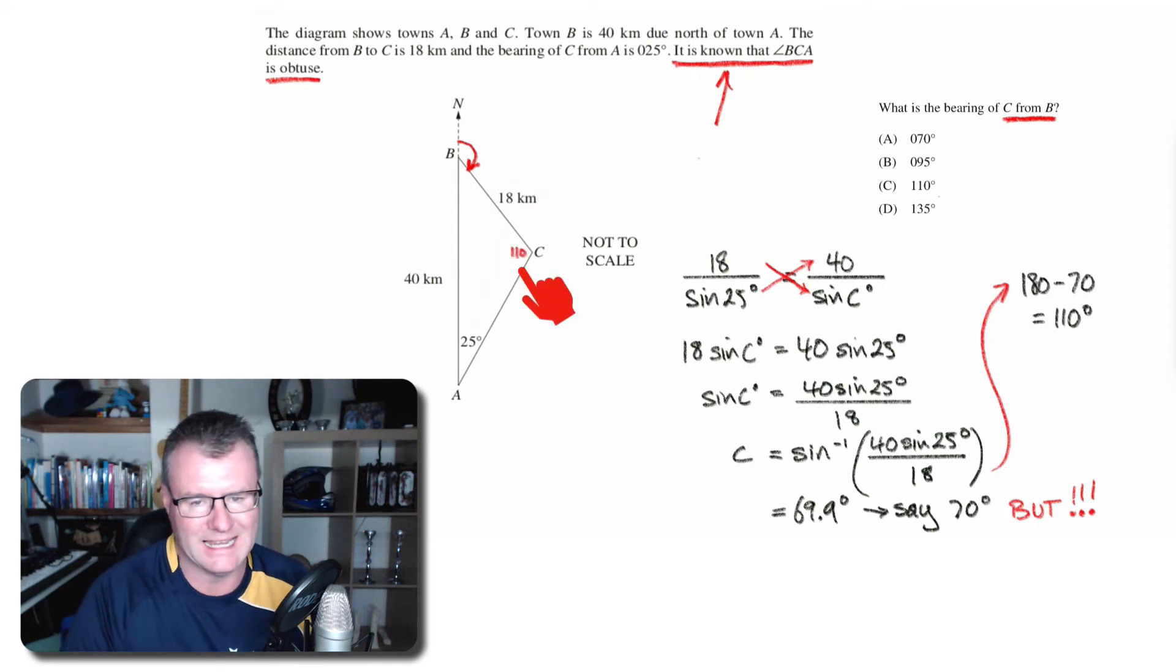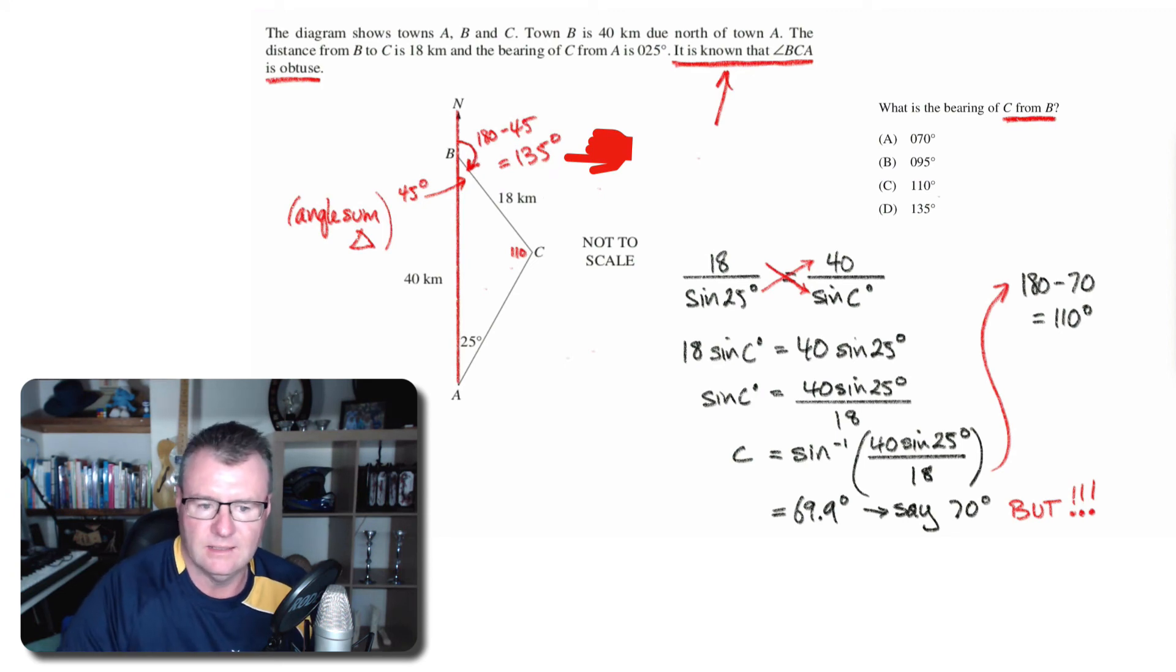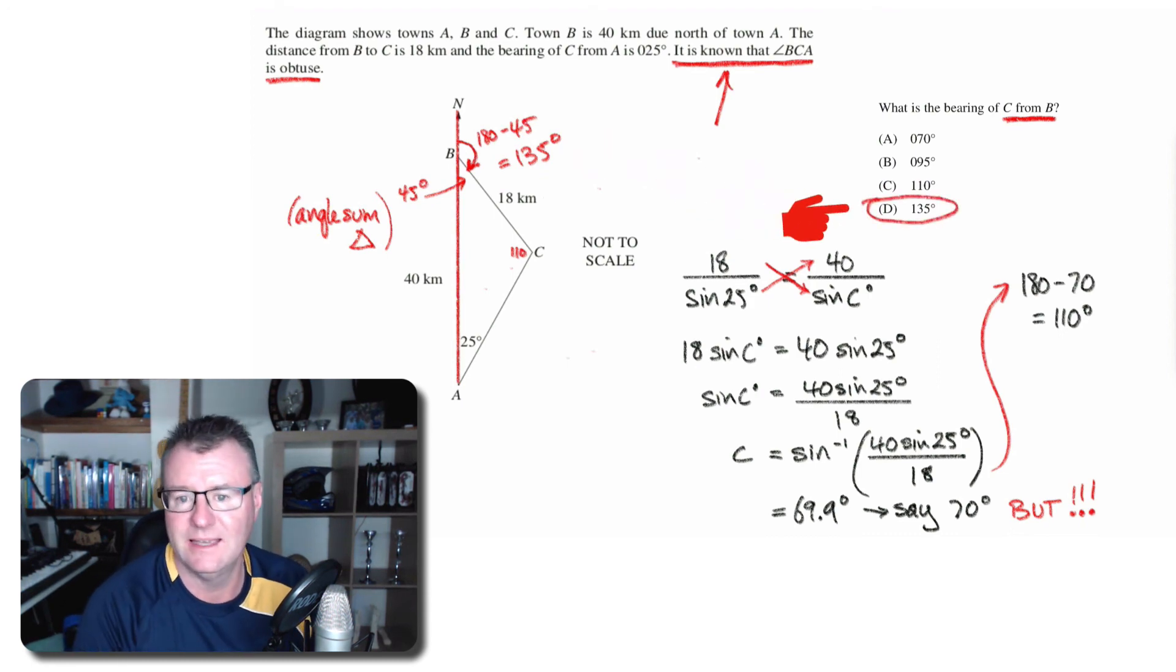Now that helps me because I can now work out the angle I wanted originally. The angle sum of the triangle—all three internal angles have to add up to 180 degrees—so that must be 45. Now if that's 45 and AB is a straight line, then the supplementary angle to that is 135, and that is my bearing. So that bearing that BC is on is a bearing of 135, and that happens to be answer D.